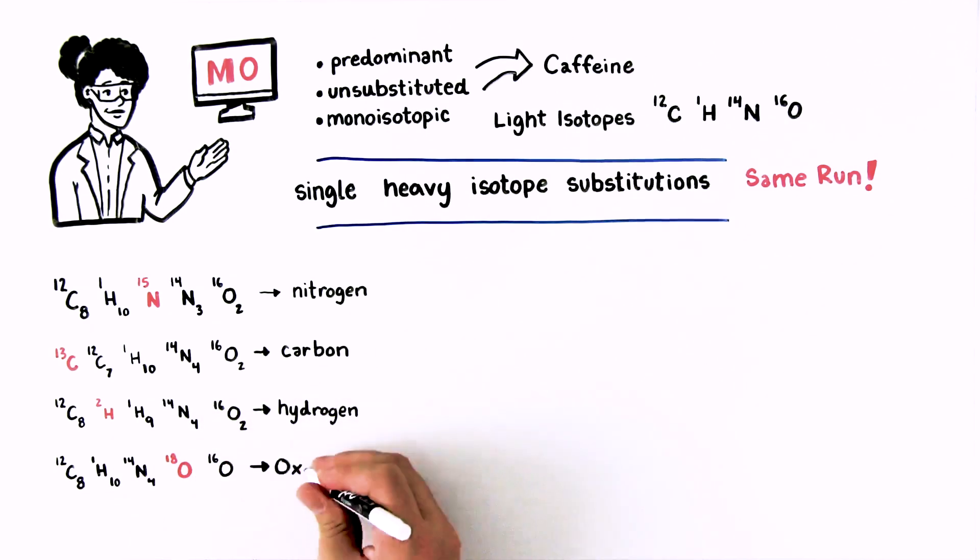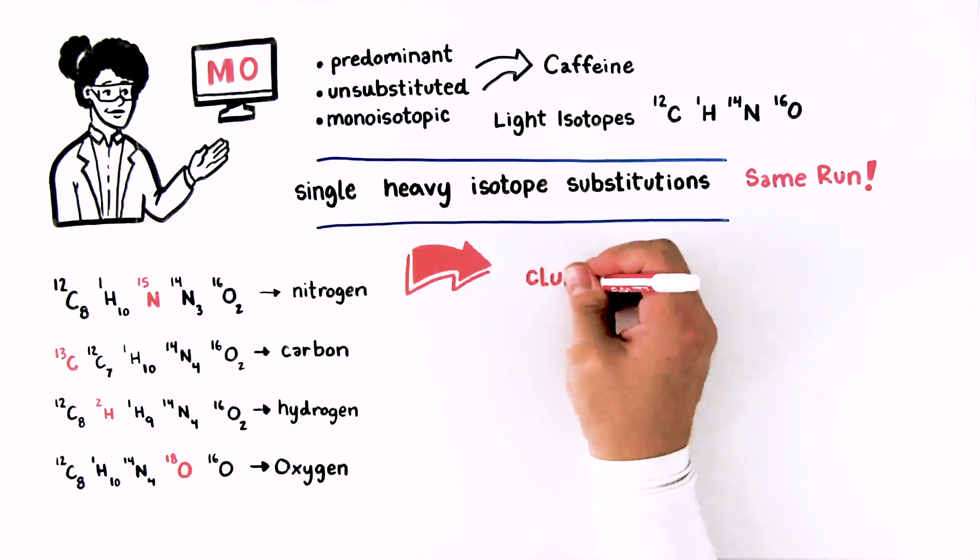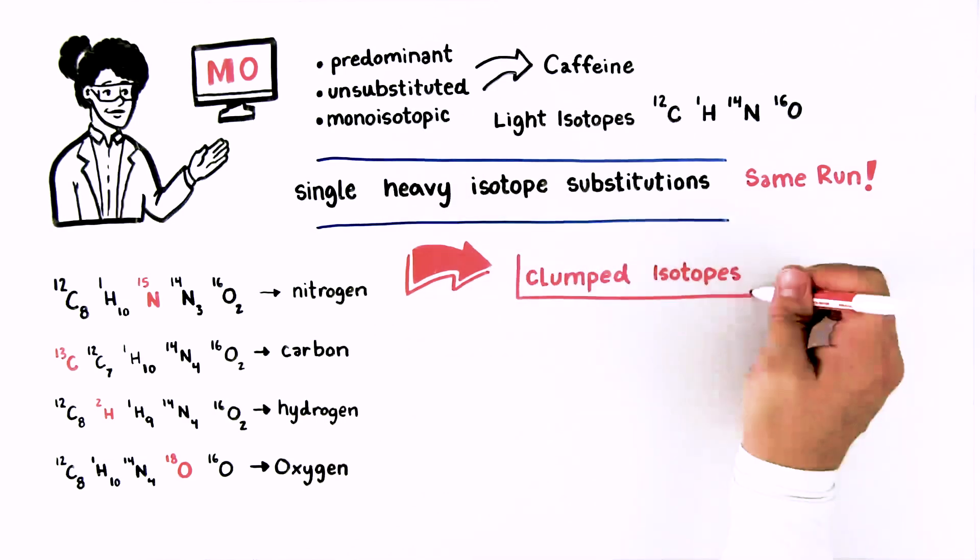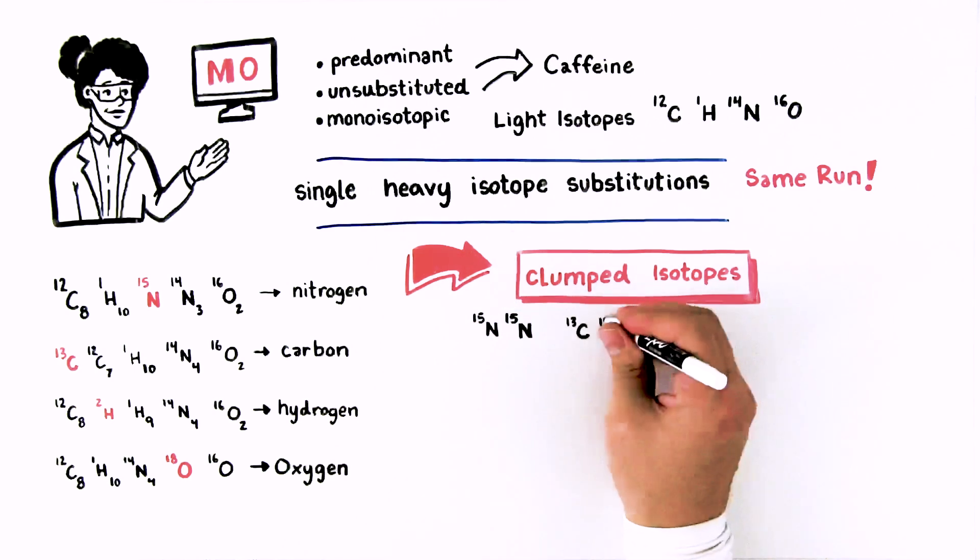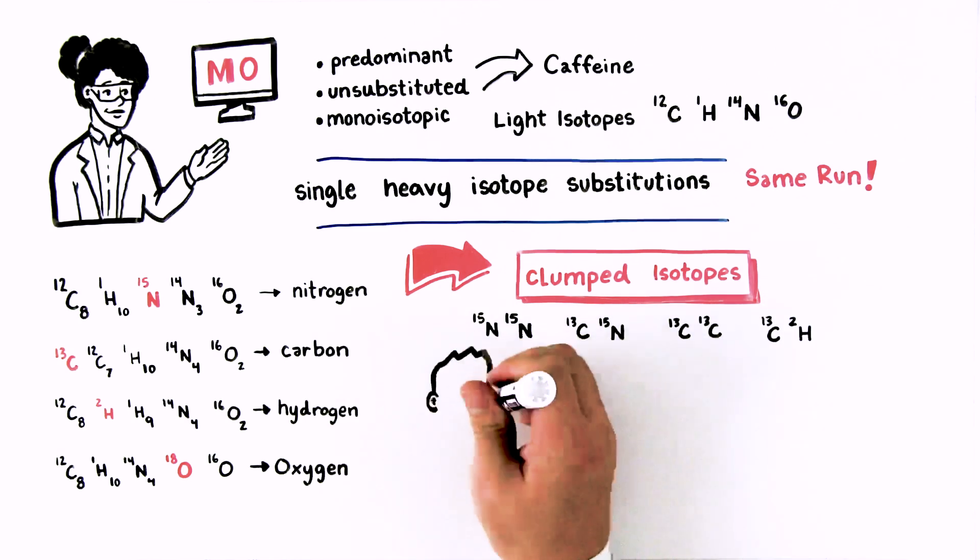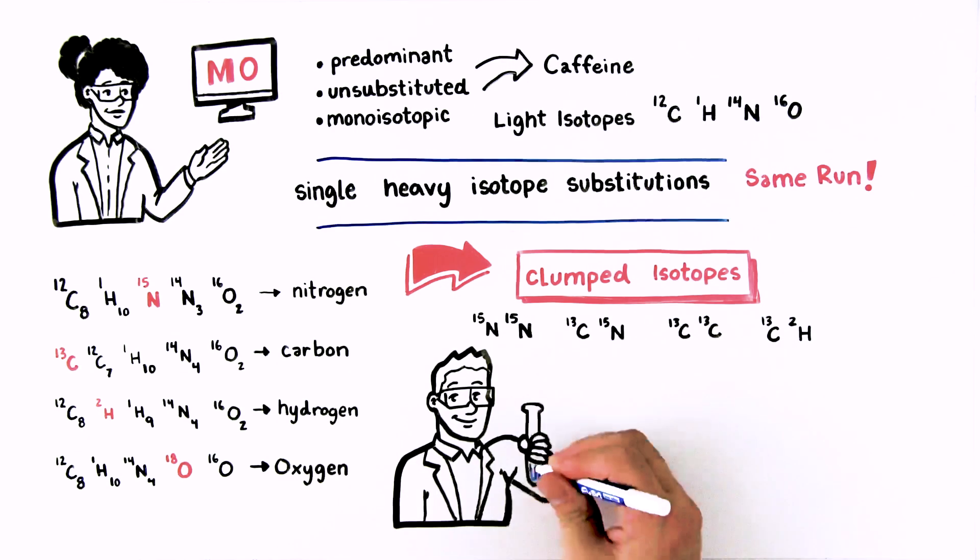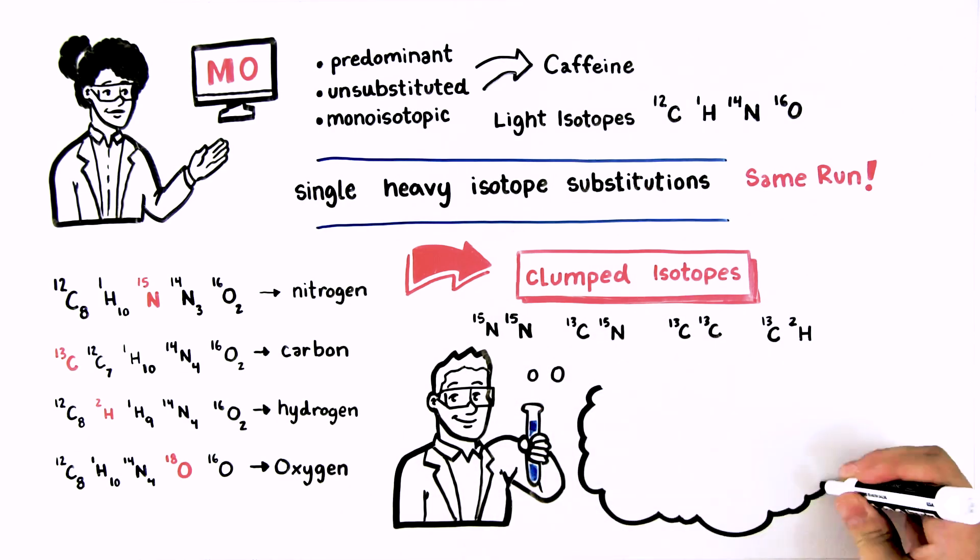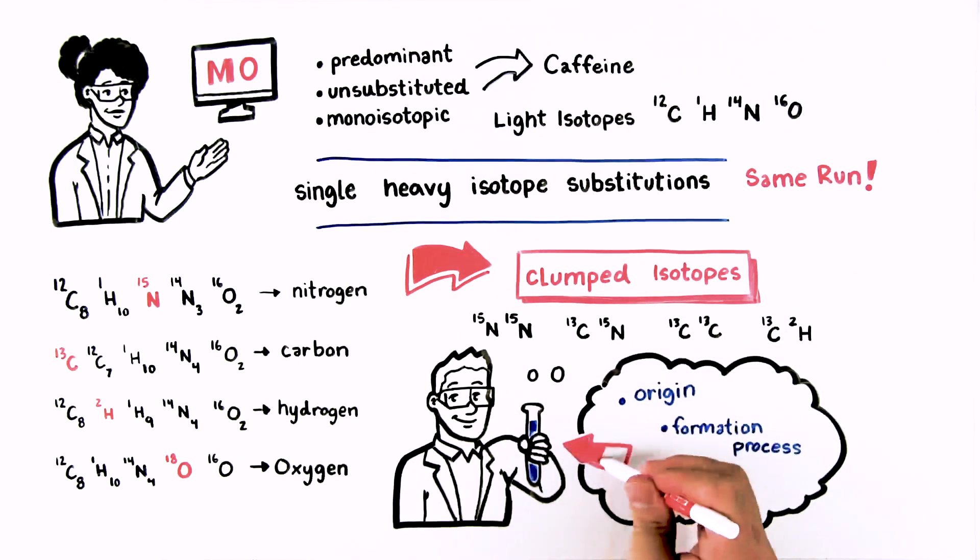But that's not all. Multiple heavy isotope substitutions known as clumped isotopes such as 15N 15N, 13C 15N, 13C 13C, and 13C 13C deuterium can also be analyzed. So you are presented with a wealth of isotopic information from a single analysis, allowing you to open new dimensions in understanding the origin, formation process, and history of your samples.